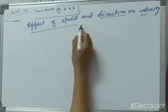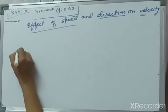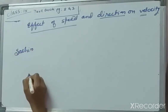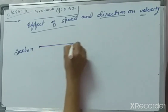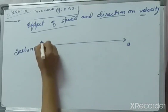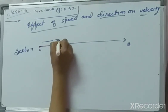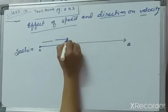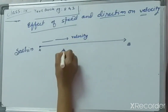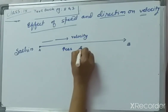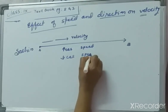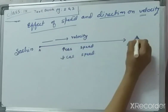Let us see the effect of speed and direction on velocity. Say for example Sachin is riding on his motorcycle and he takes the straight line path to reach from one place to another. When he is moving on his bike, we have to find out the effect on its velocity if he increases speed or decreases speed along the straight line path.